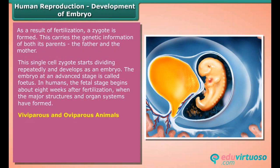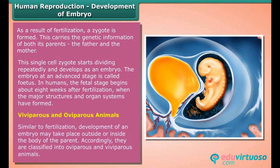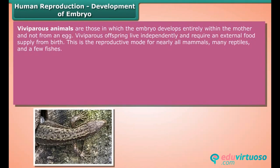Similar to fertilization, development of an embryo may take place outside or inside the body of the parent. Accordingly, they are classified into oviparous and viviparous animals. Viviparous animals are those in which the embryo develops entirely within the mother and not from an egg. Viviparous offspring live independently and require an external food supply from birth. This is the reproductive mode for nearly all mammals, many reptiles, and a few fishes.